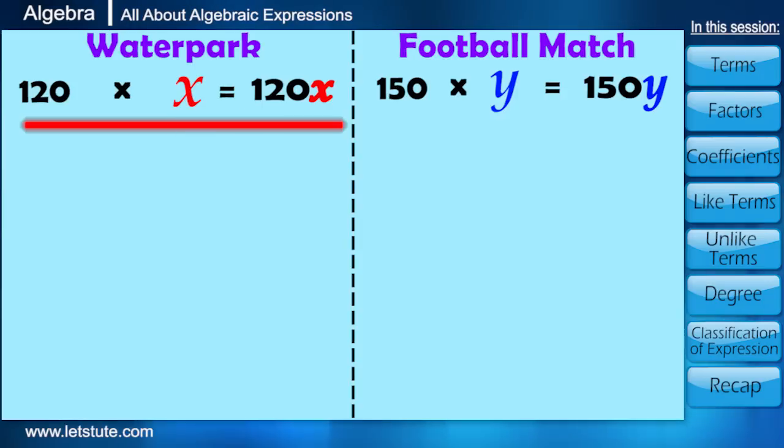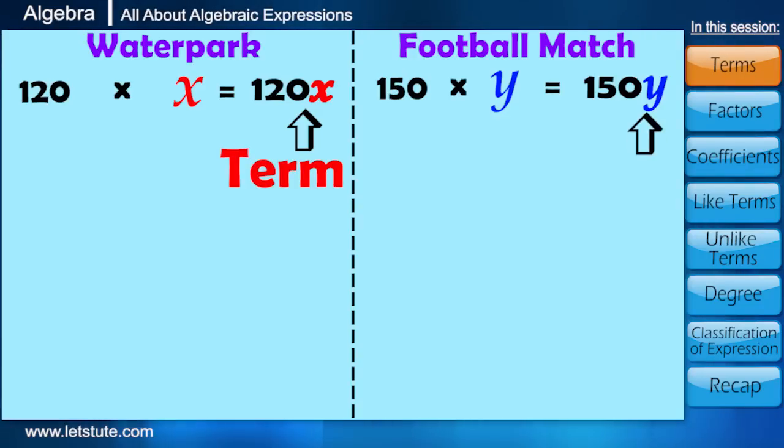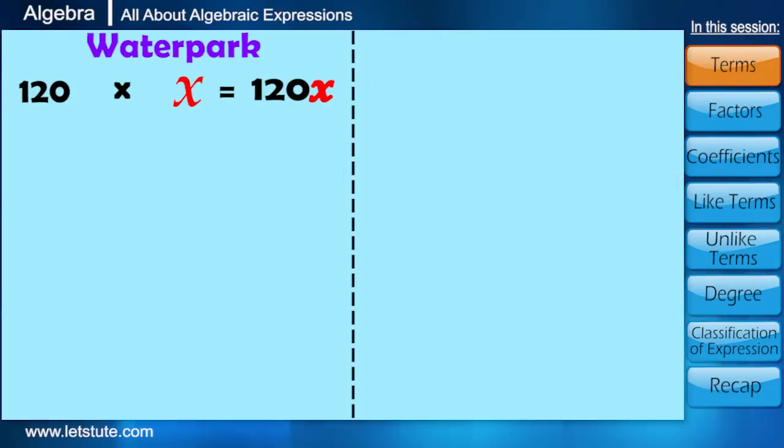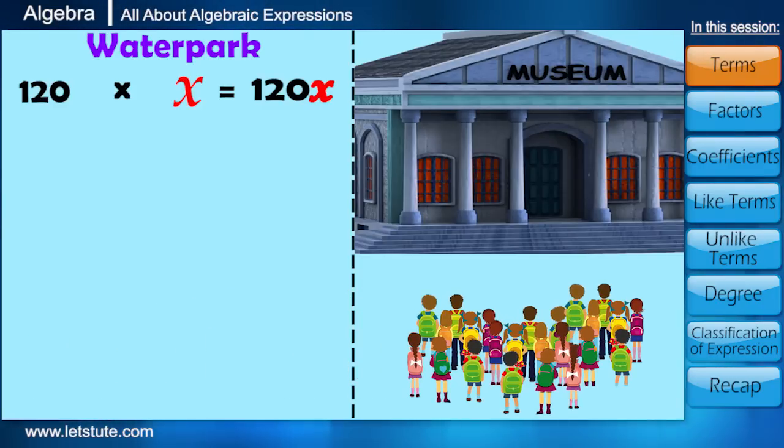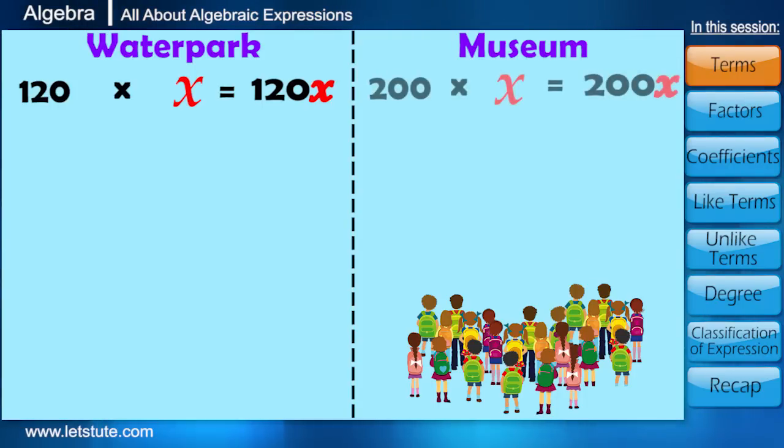Here, the formula to obtain the fees for students going for water park, that is 120 into X, is called as a term. Similarly, 150 into Y is also a term. Now, suppose after visiting the water park, same number of students X are again going to visit the museum with 200 as an entry fee. Then what will be the total amount? It will be 200 into X, right? And here 200 into X is again a term.